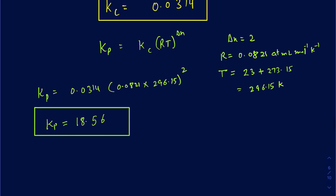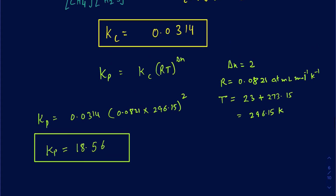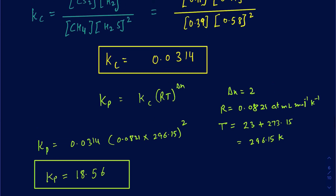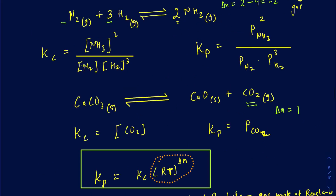This is a typical type of question where you may be given Kp and asked for Kc, or given Kc and asked for Kp. If you have any questions, feel free to leave comments in the section below.